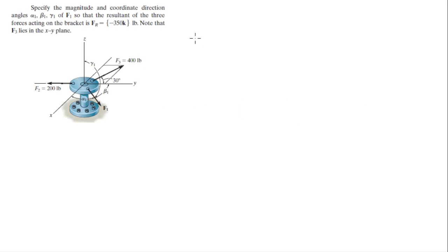Alright guys, so we're going to do this problem which says specify the magnitude and coordinate direction angles of F1 so that the resultant force of the three forces acting on this bracket is negative 350K. Note that F3 lies on the XY plane.